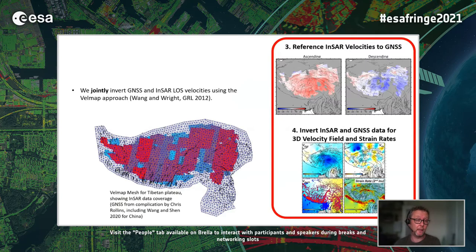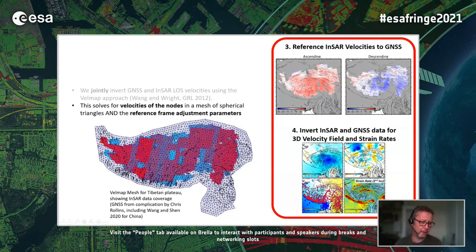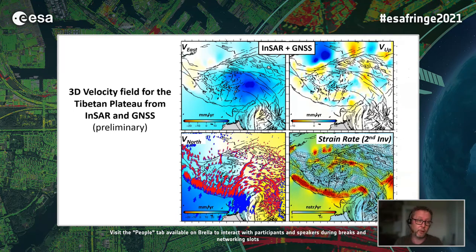We jointly invert the GNSS and the INSAR line-of-sight velocities using the VELMAP approach, described in the paper by Wang and Wright in 2012. This involves setting up a mesh of spherical triangles and solving for the velocities of the nodes, while simultaneously solving for the reference frame adjustment parameters for each INSAR track. Here's the resulting 3D velocity field on that mesh for the Tibetan plateau: the east component, vertical component, and north component. We're using horizontal GNSS in this current inversion, so the vertical is just coming from INSAR alone.